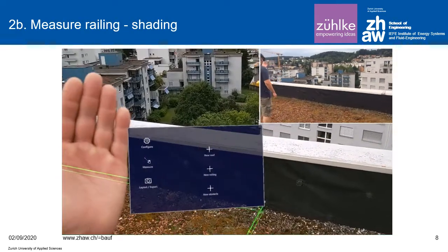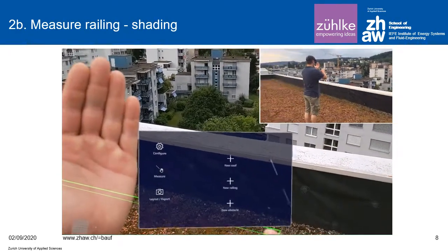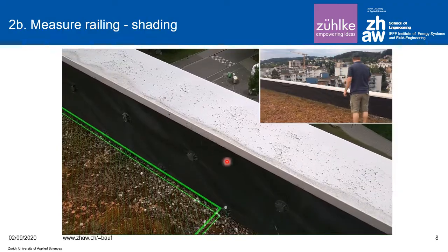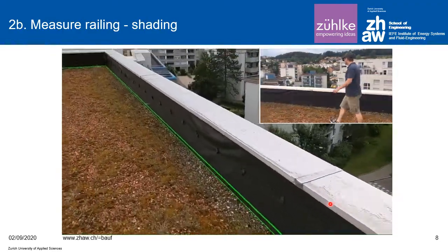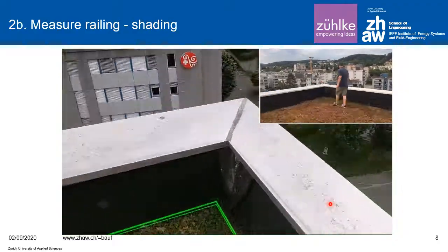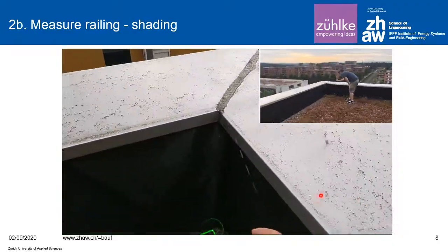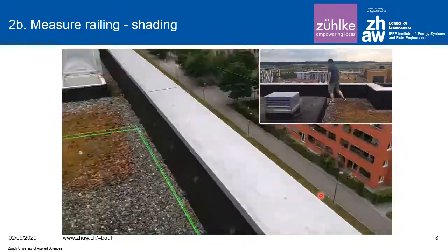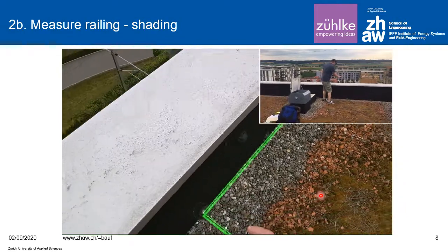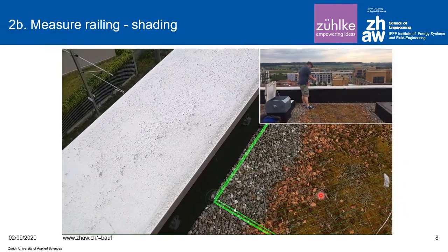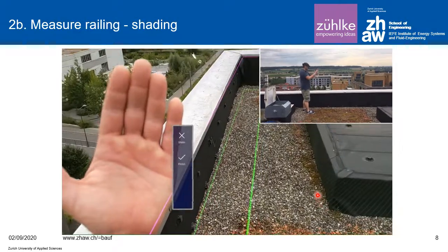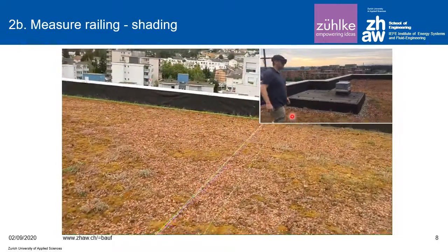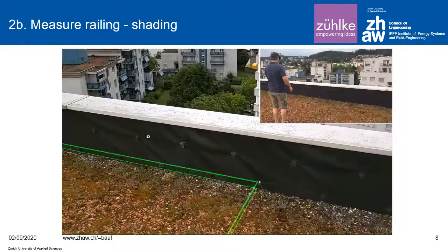The next step is measuring the railing of the roof. We locate the green ball on the railing at the corner, then the next corner as before, finding every point on the railing at the edge. Here you can see the pink railing marking the entire outer perimeter of this roof.